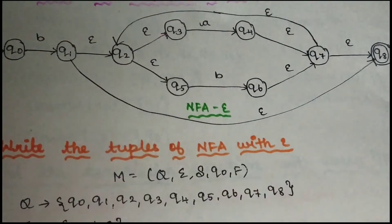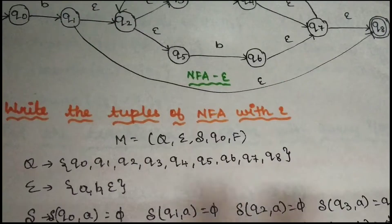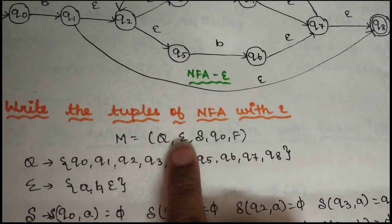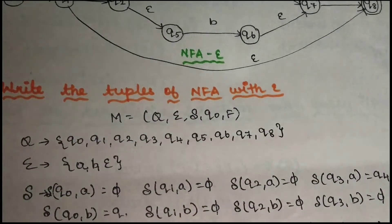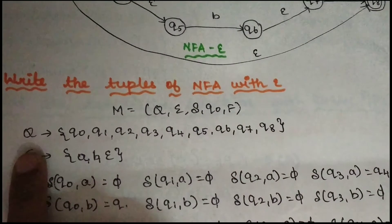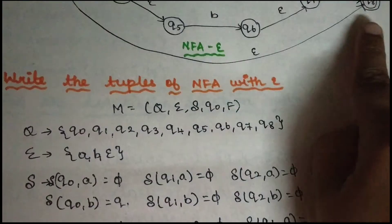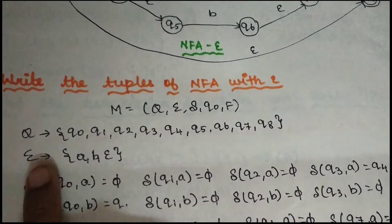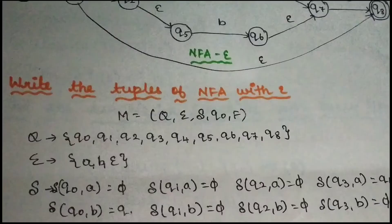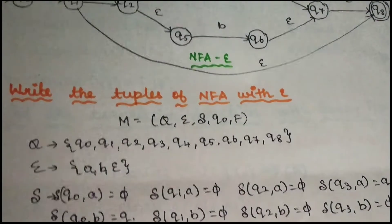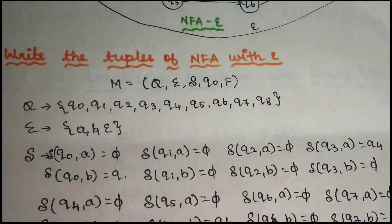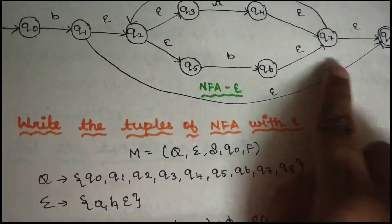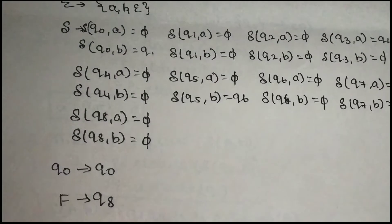You can change NFA with epsilon. You can read the states without tuples. NFA with epsilon — we know the tuples: Q, summation, transition, Q0, F. Q is the number of states. Summation is the number of input symbols — A, B. Summation is the number of input symbols. Transition function — all states can go somewhere given an input. The starting state is Q0 and the final state is Q8. So starting state and final state is what it's all about.